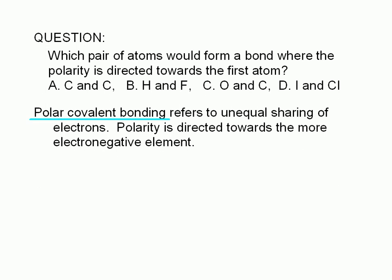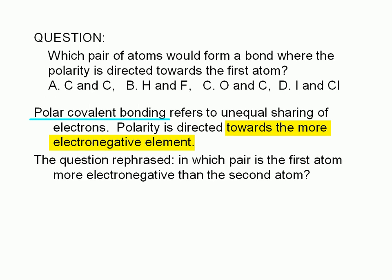Polar covalent bonding refers to unequal sharing of electrons. Polarity is directed towards the more electronegative element. The question rephrased: in which pair is the first atom more electronegative than the second atom? We need to find the pair where the first atom is more electronegative than the second.